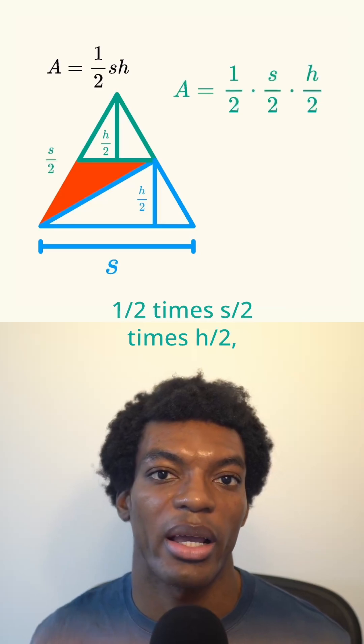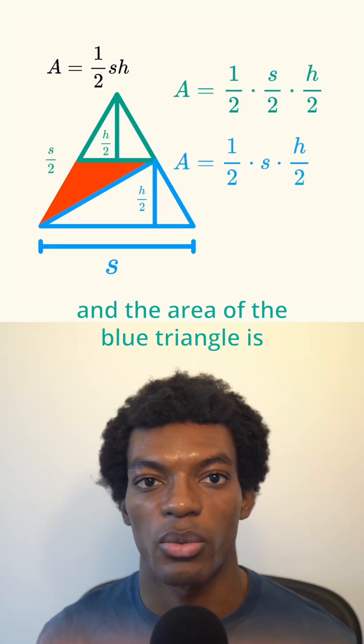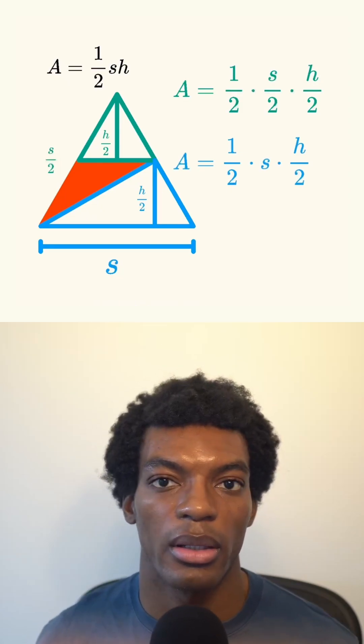The area of the green triangle is 1 half times S over 2 times H over 2, and the area of the blue triangle is 1 half times S times H over 2. Now let's add those together.